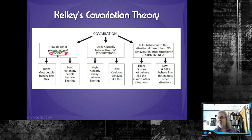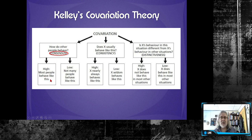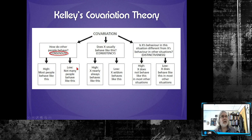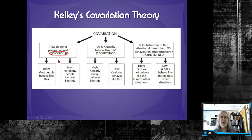The first factor is consensus. By consensus we're looking at how does this person's behavior compare to other people in the same situation — do most people do this? If consensus is high, most people do this. For example, most people in an elevator look forward. If someone does that, it's high consensus. If they look at the back wall or at you, that's low consensus — most people don't do that.